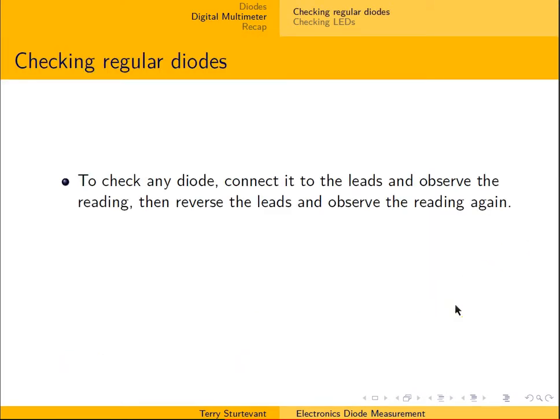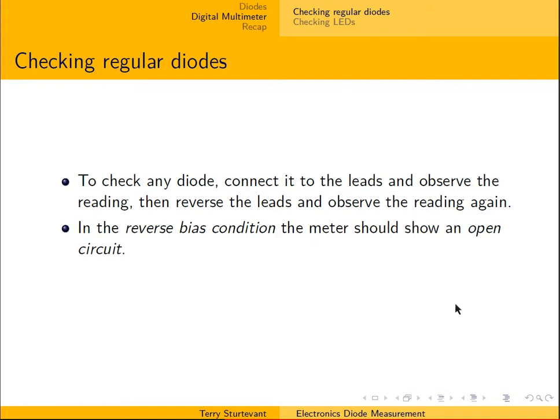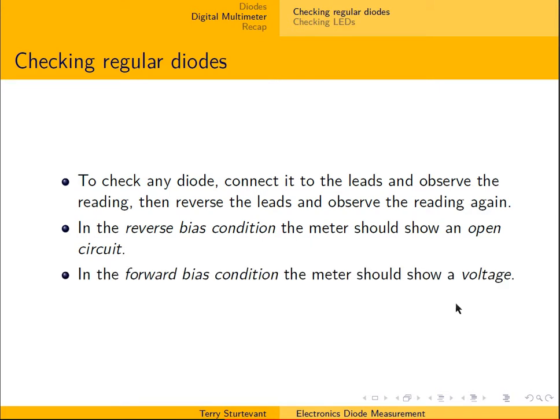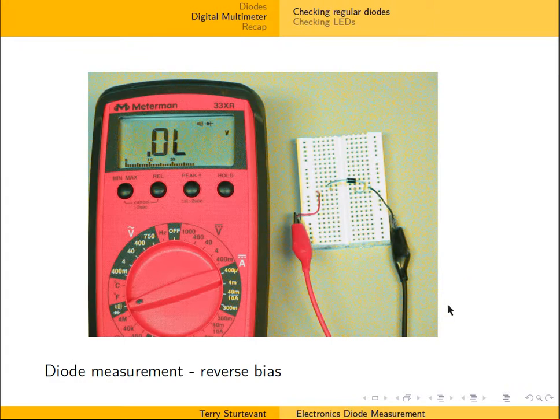To check a regular diode, connect it to the leads and observe the reading, then reverse the leads and observe the reading again. In the reverse bias condition, the meter should show an open circuit. In the forward bias condition, the meter should show a voltage.